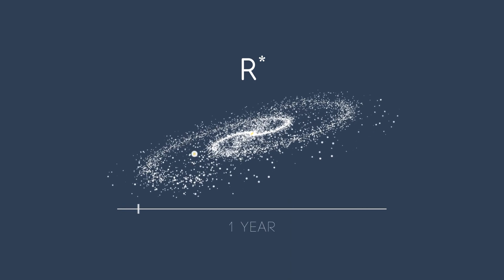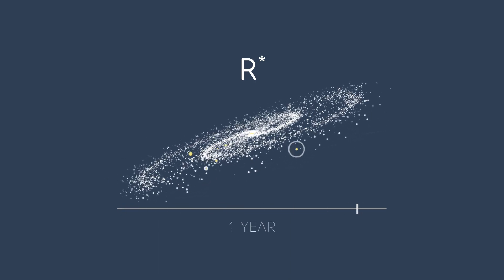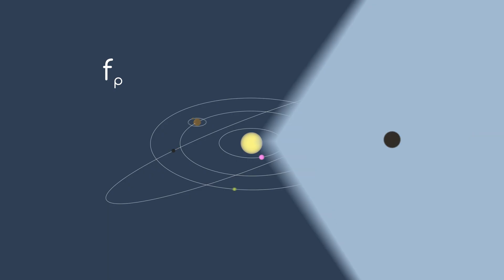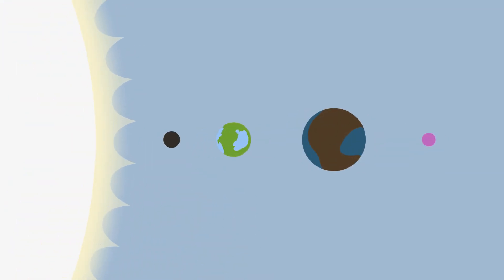So R* refers to the yearly rate of star formation in our galaxy. The next term in the equation is Fp, or the fraction of stars that actually have planetary systems. So now that we've got planets,